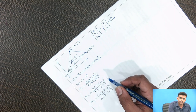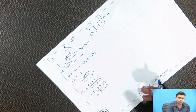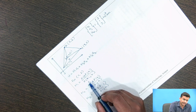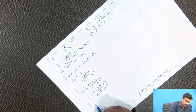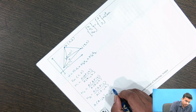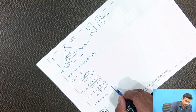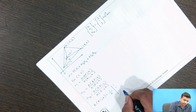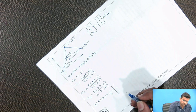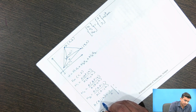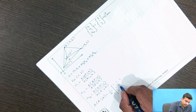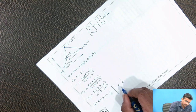Area of triangle i,j,k = (1/2) × determinant of the matrix with first column [1,1,1] and second and third columns filled with Cartesian coordinates of i, j, k. The coordinates are: i=(1,1), j=(8,2), k=(4,6).